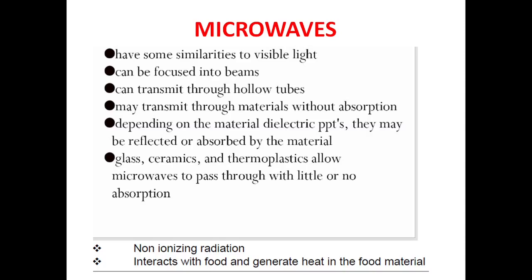Depending on a material's dielectric properties, microwaves can be reflected or absorbed. Just as light can be reflected, absorbed, or transmitted, microwaves interact with materials in the same three ways — some part reflected, some absorbed, and some transmitted through. This depends on the properties of the material.